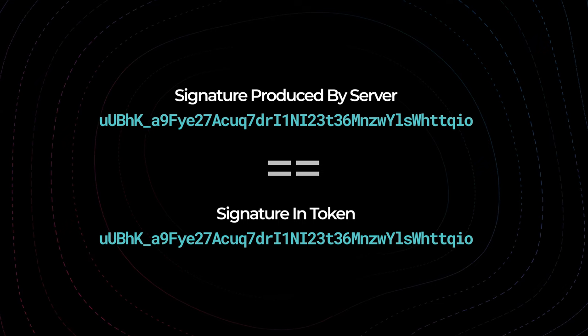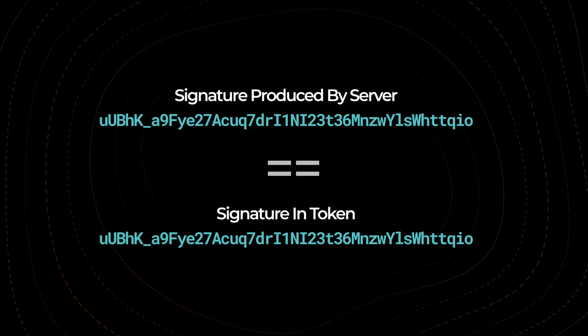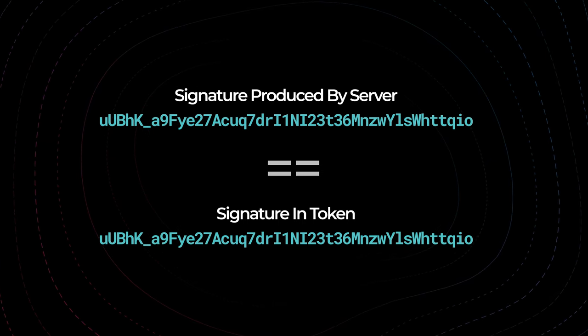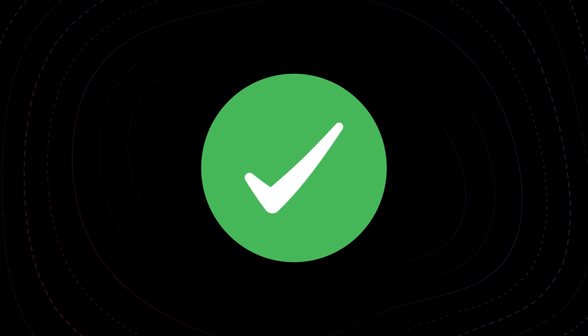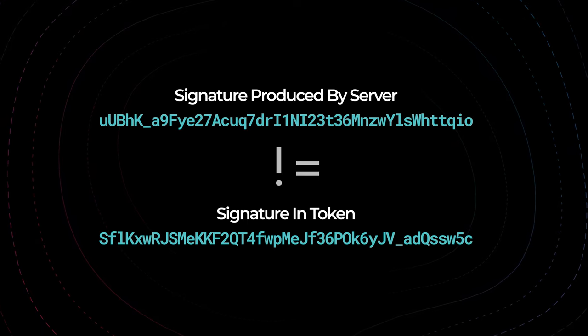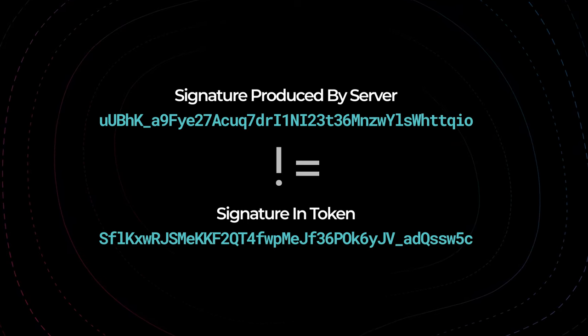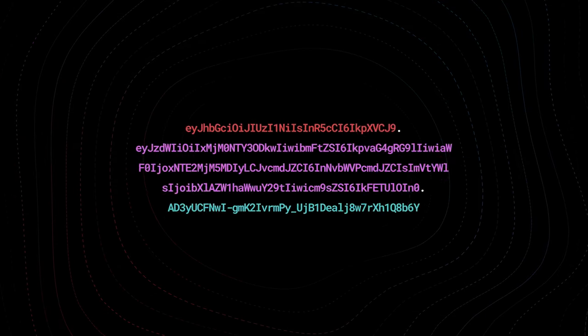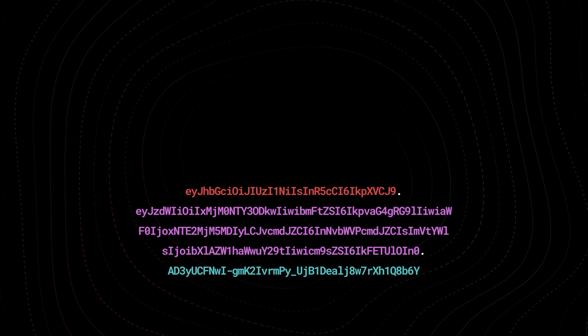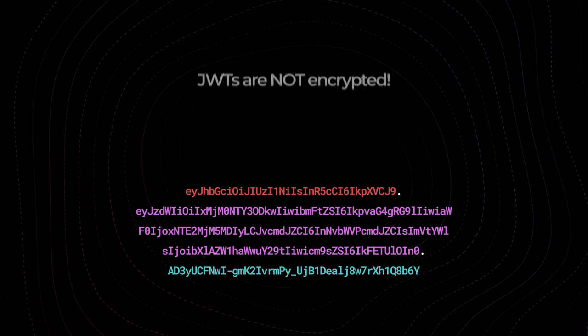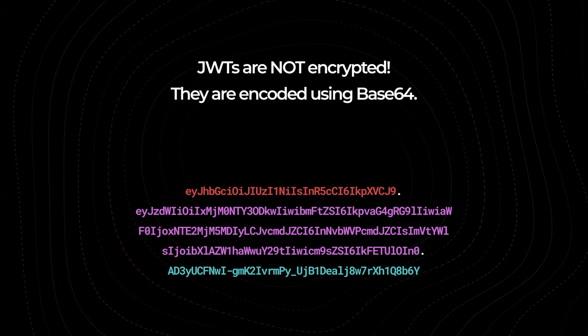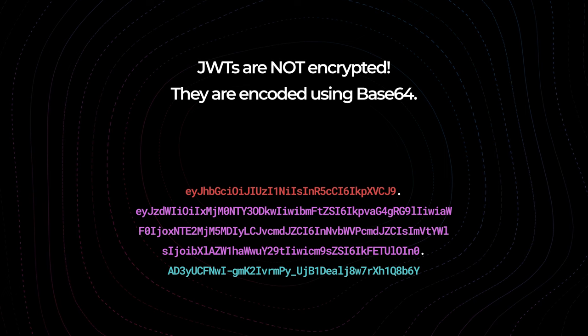The server then compares that computed signature to the signature that the user provided in the token. If the signatures match, that's great — it means the token is legit and was not altered or tampered with. If the signature does not match, then authorization fails.